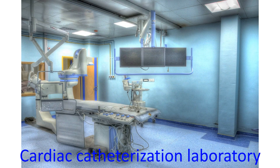The modified BT shunt can be removed at the time of complete repair of tetralogy of Fallot. This prevents future problems due to potential decrease in blood supply to the arm and increased blood supply to the lungs. There is also a small risk of infection if the shunt remains there lifelong. Alternatively, the modified BT shunt can be occluded by a coil or device introduced through blood vessels under the guidance of X-ray imaging in a cardiac catheterization laboratory.